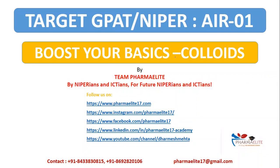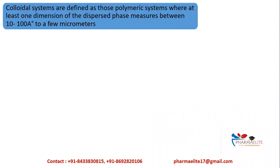Welcome to Farm Highlight. Today we have another video on the topic of colloids from the Boost Your Basic series. Colloids are defined as polymeric systems where at least one dimension of the dispersed phase measures between 10 to 1000 angstroms to a few micrometers — that is the colloidal range.